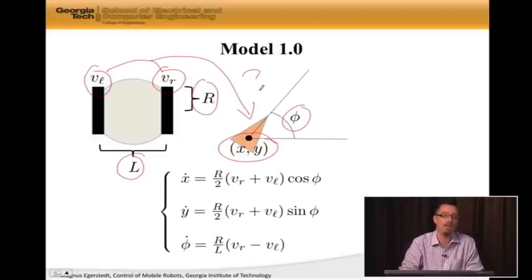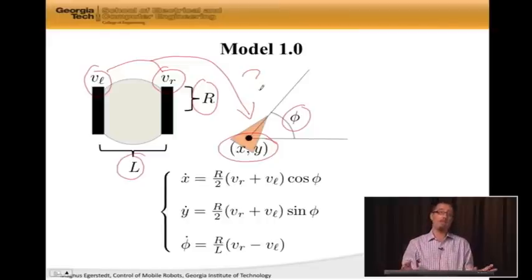It tells me how V R and V L translates into X dot, which is how the X position of the robot changes, or Y dot, which is how the Y position changes, or phi dot, meaning how the robot is turning. So this is a model that gives us what we need in terms of mapping control inputs onto states.